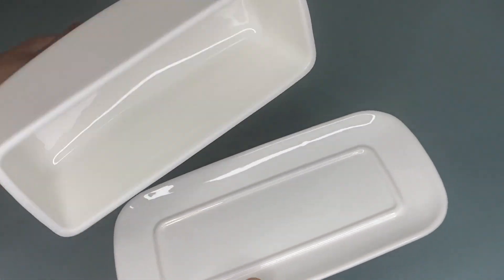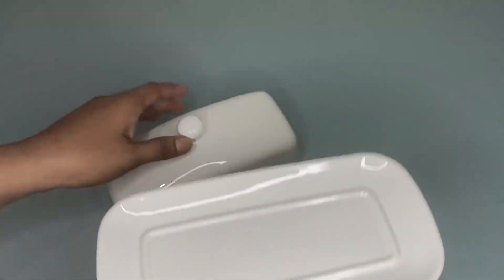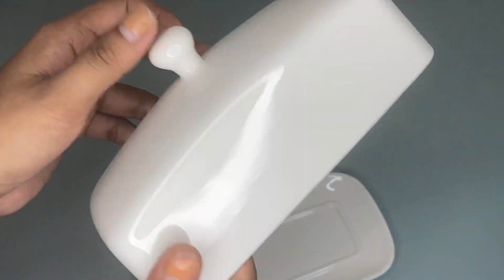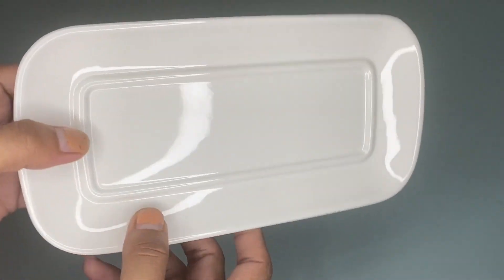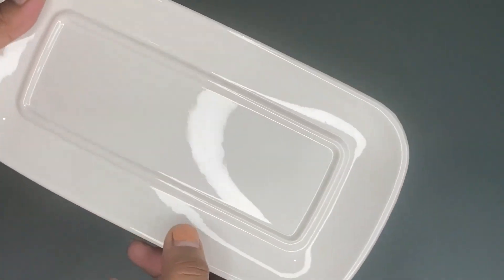As you can see, we have this butter dish with lid, and it is made of porcelain. This butter holder measures 7.8 by 4.1 by 4.2 inches.